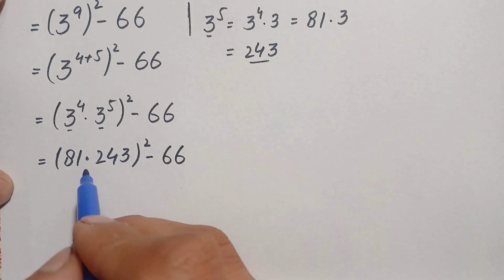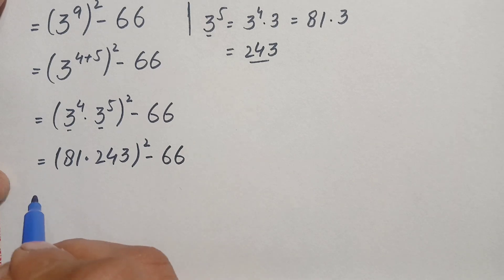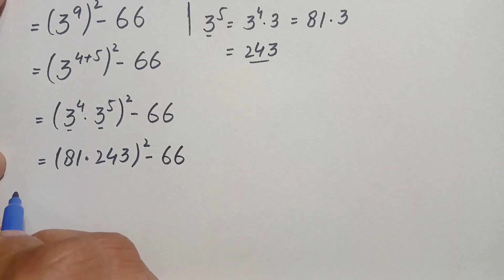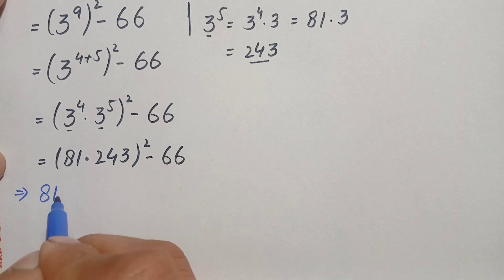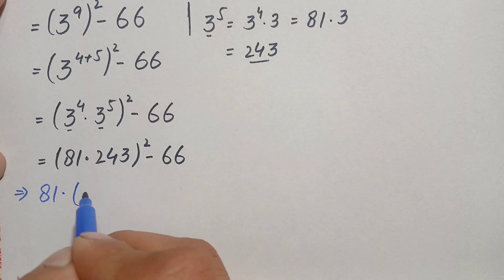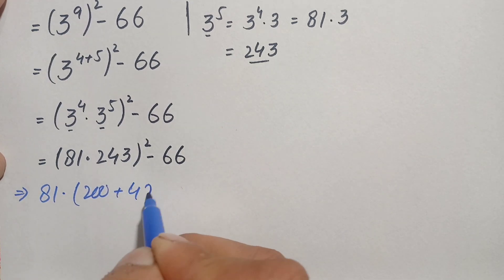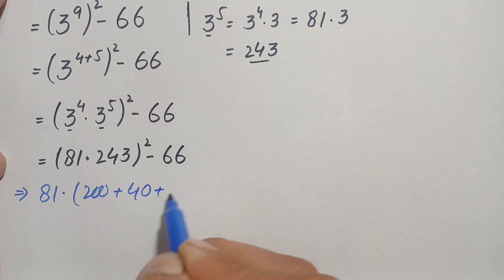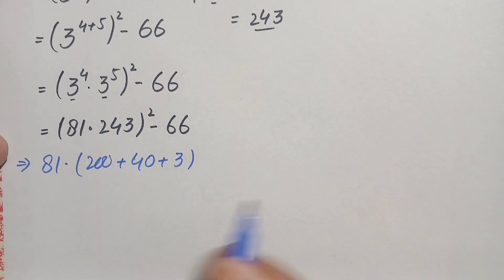Now we will try to multiply these two numbers — 81 and 243 — with each other, and then take the square of that product. So we will multiply 81 times 243.